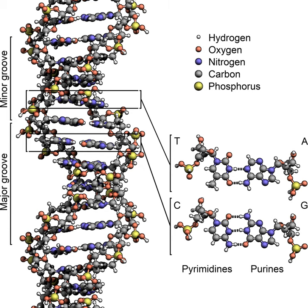In the laboratory, the strength of this interaction can be measured by finding the temperature required to break the hydrogen bonds, the melting temperature, also called the Tm value. When all the base pairs in the DNA double helix melt, the strands separate and exist in solution as two entirely independent molecules. These single-stranded DNA molecules have no single shape, but some conformations are more stable than others.